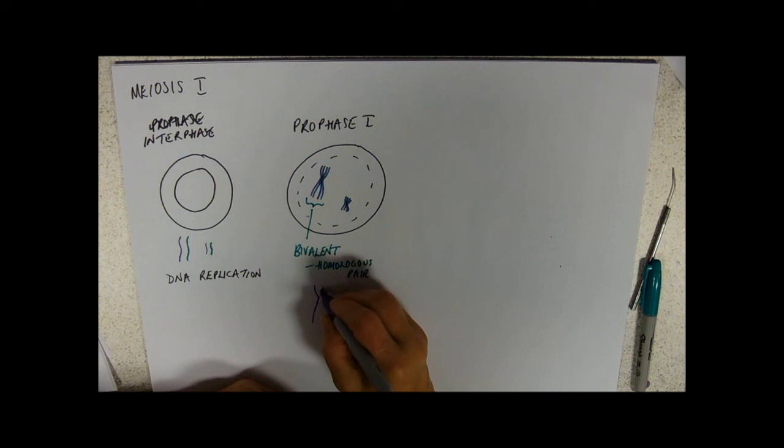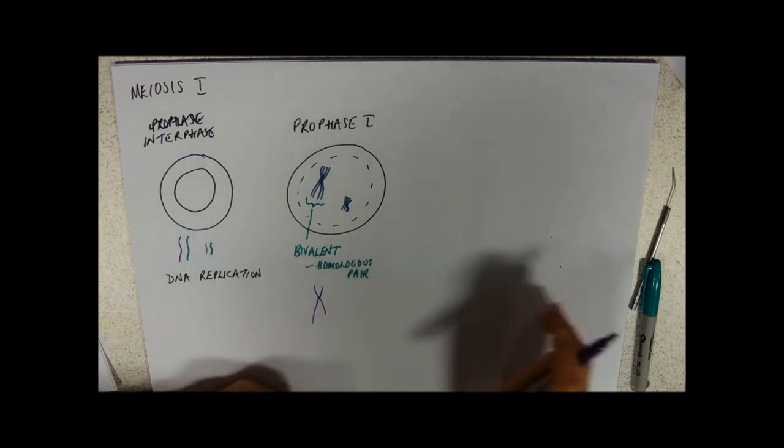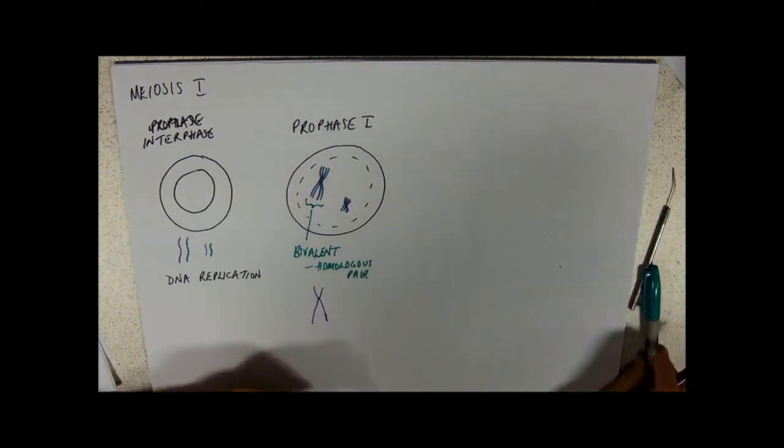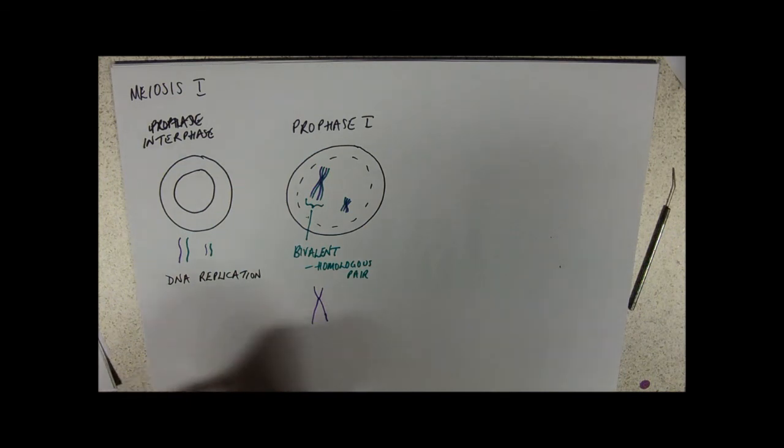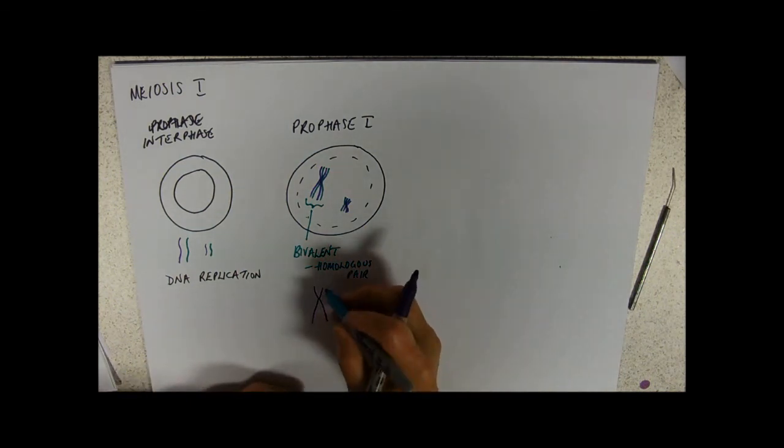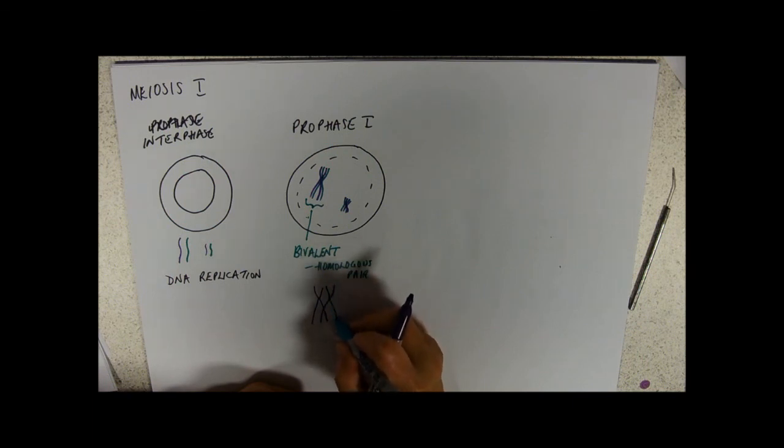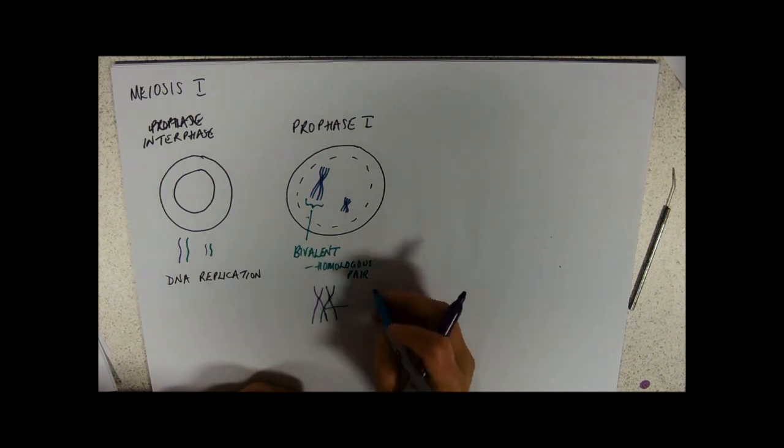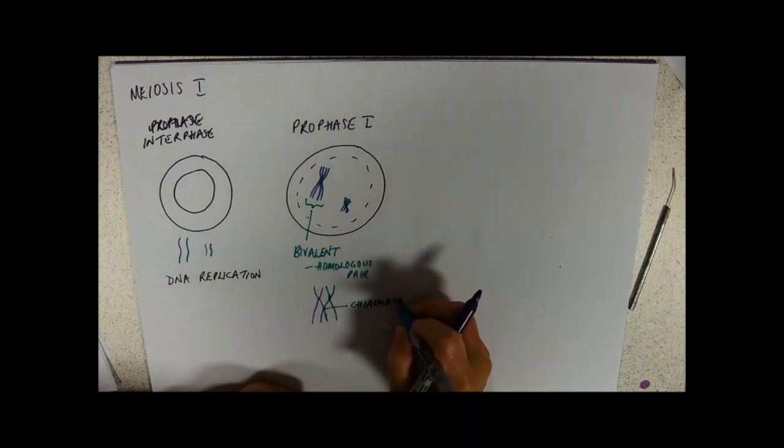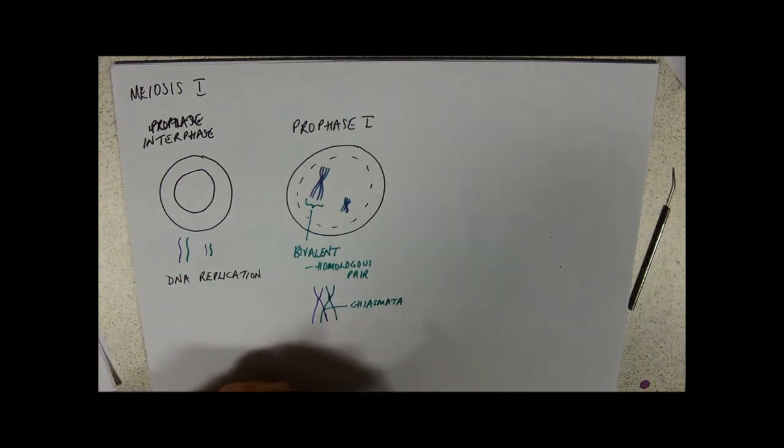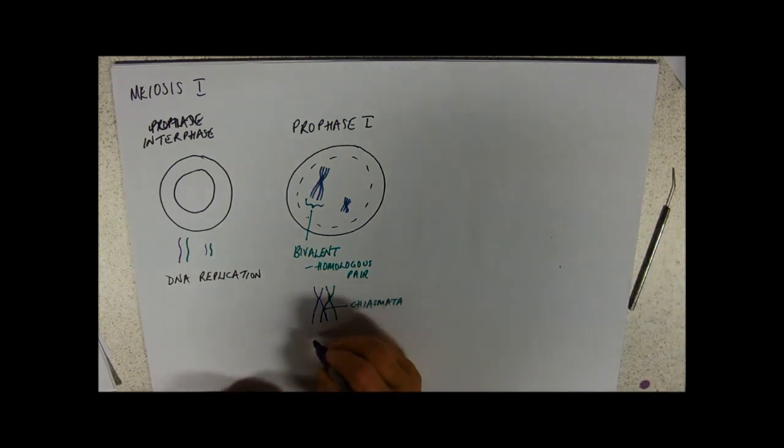And what happens then is this process of crossing over. So, crossing over kind of works like this. Your chromosomes are very sort of tightly wound together. They break at places called chiasma. You're okay using chiasmata, that means two of them or more.